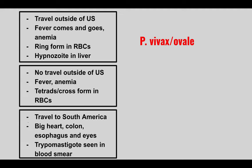The next patient has no travel outside of the US but has similar symptoms — fever and anemia — but this time we see tetrads or a cross form in the red blood cells. This is Babesia. Key clues: the travel history distinguishes it, and remember malaria is spread by mosquitoes while Babesia is due to tick bites.